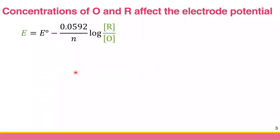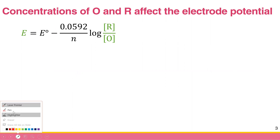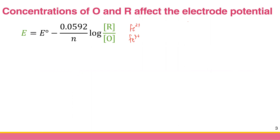What is the basic concept of potentiometry? From the Nernst equation, we can see that the concentration of the redox species — the oxidized form O and the reduced form R — for example, iron(III) and iron(II) — these concentrations can affect your electrode potential.